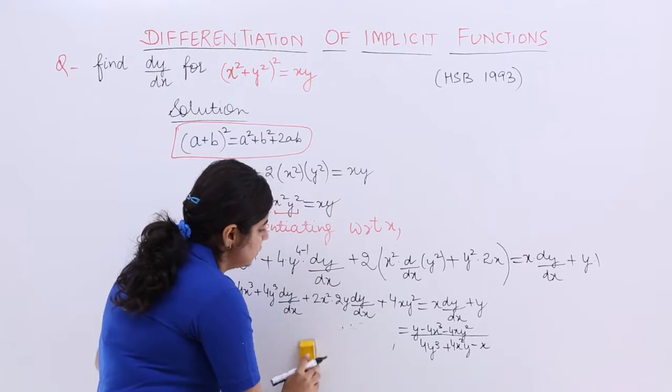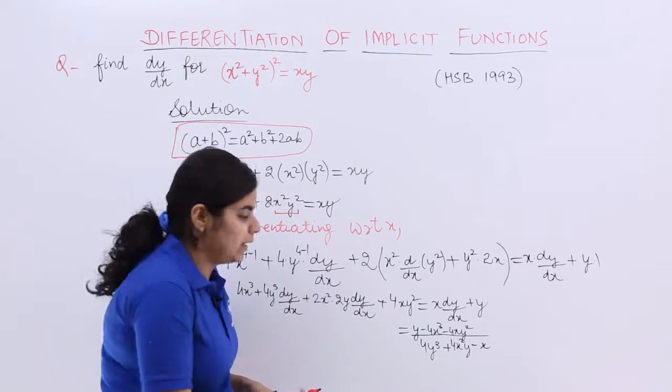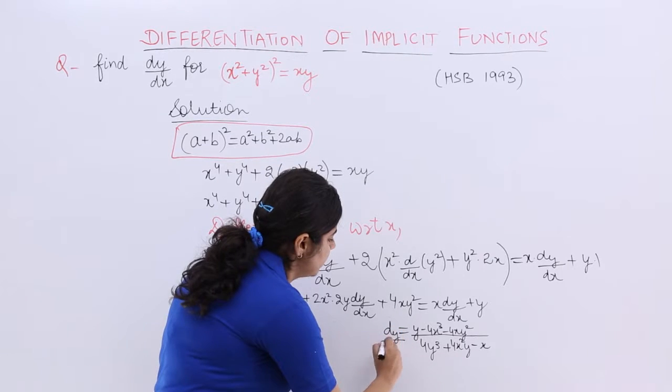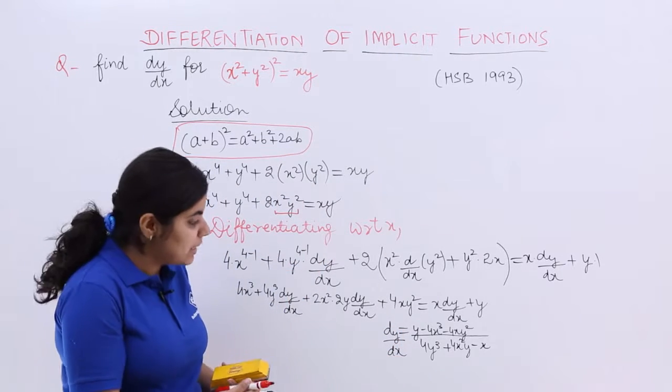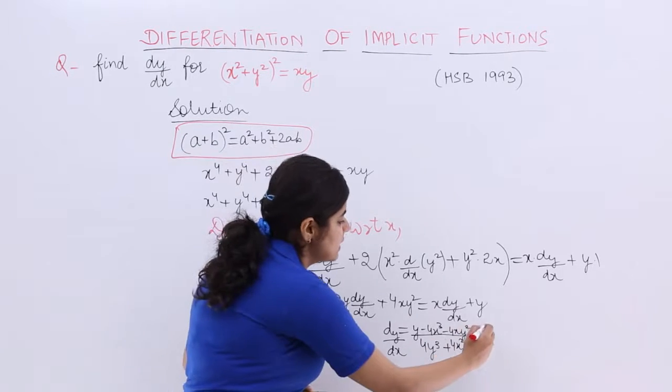So let's remove it out here. And it becomes dy/dx which is my answer. So I say that dy/dx is basically this thing which we have obtained as the answer.